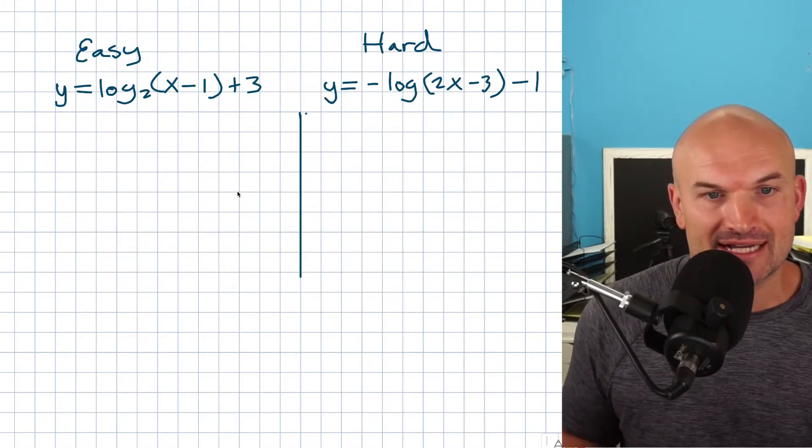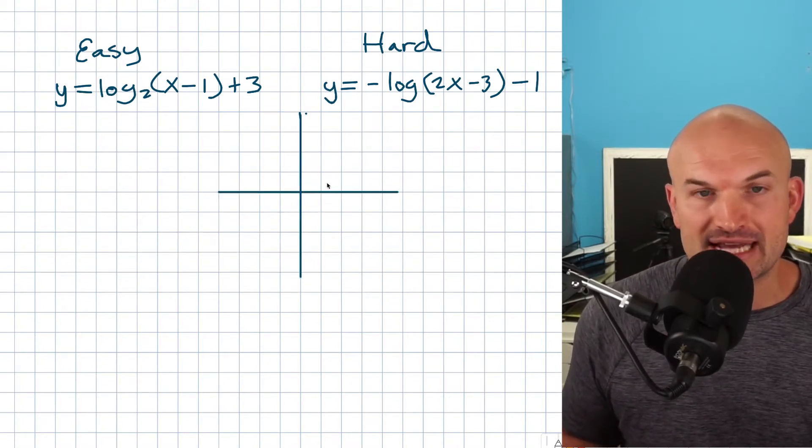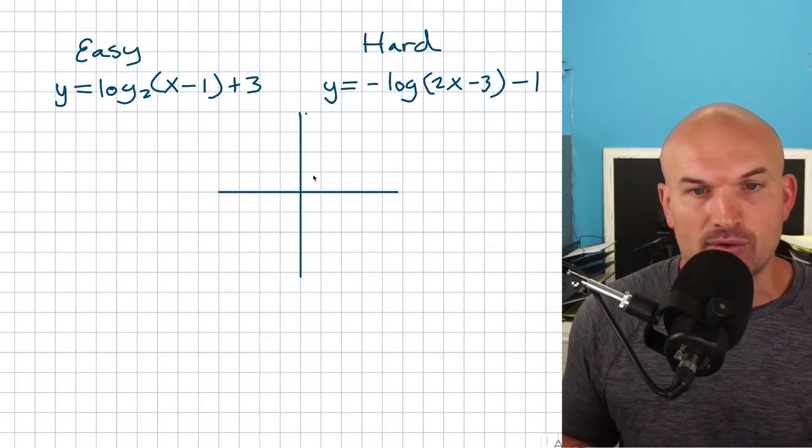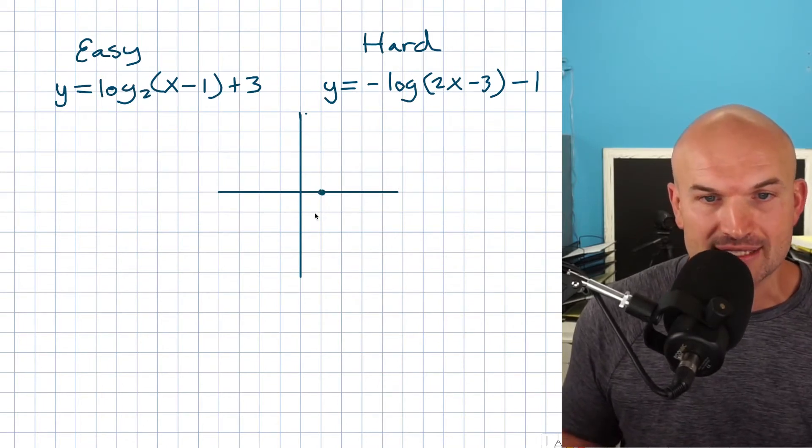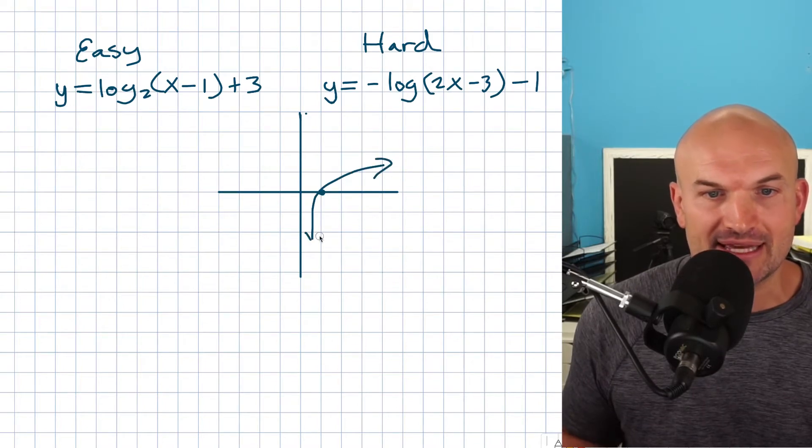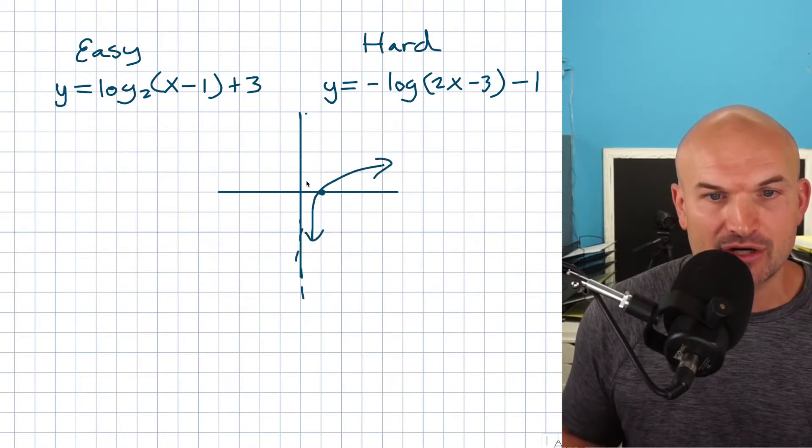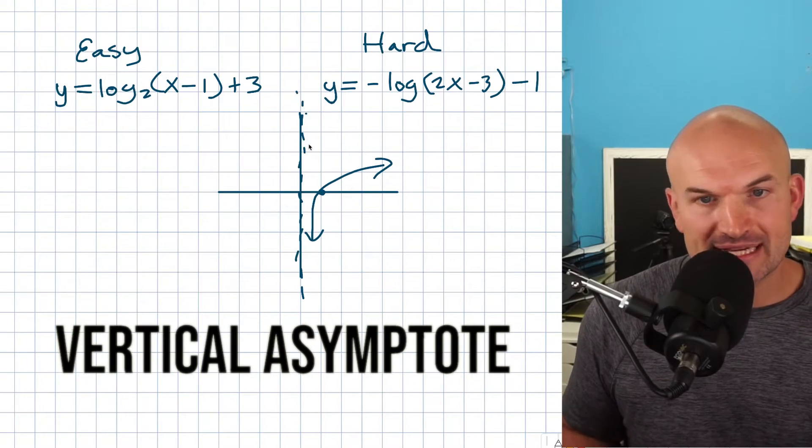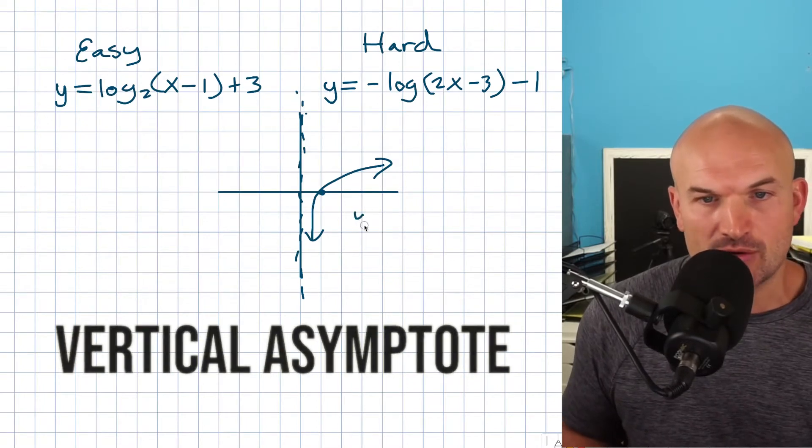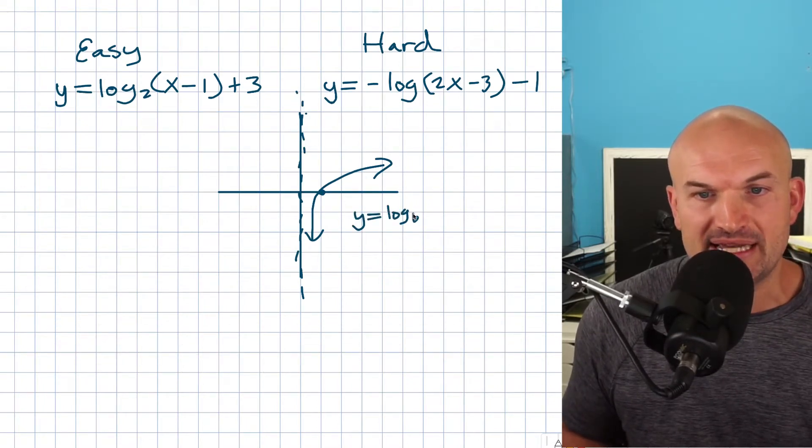If I was going to draw a nice little x and y axis here, the main thing I want you to understand is that the logarithm, doesn't really matter what the base is, the graph is going to cross at 1,0 and it's going to look something like this. Now there is going to be this nice little vertical asymptote. So that is going to be a logarithmic function and we can just call this y equals log base b of x.